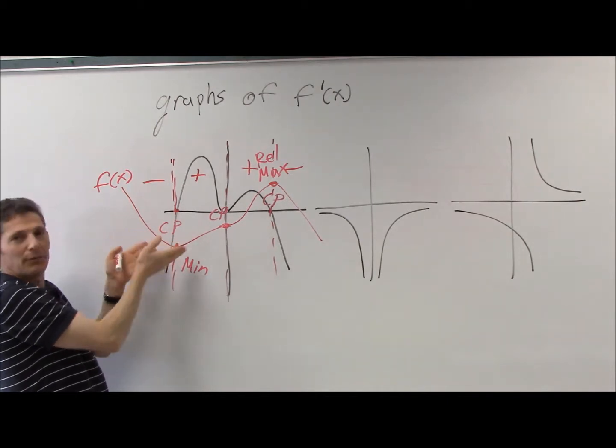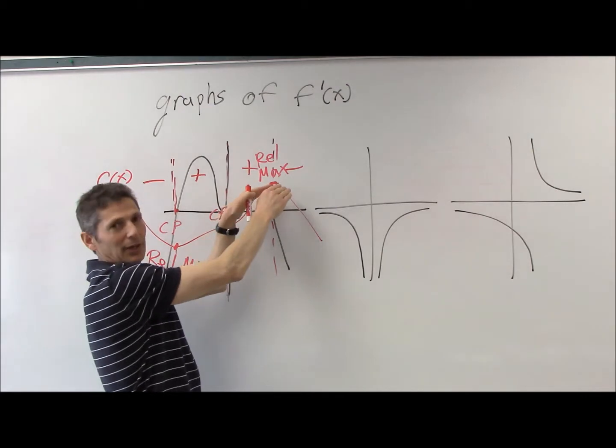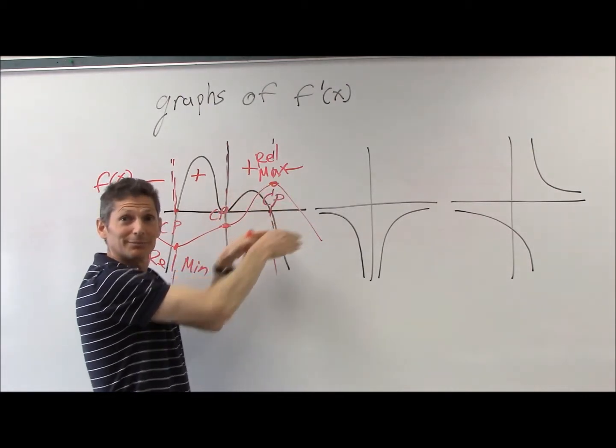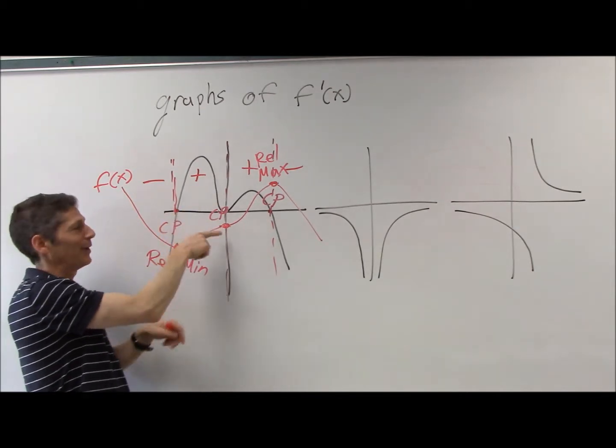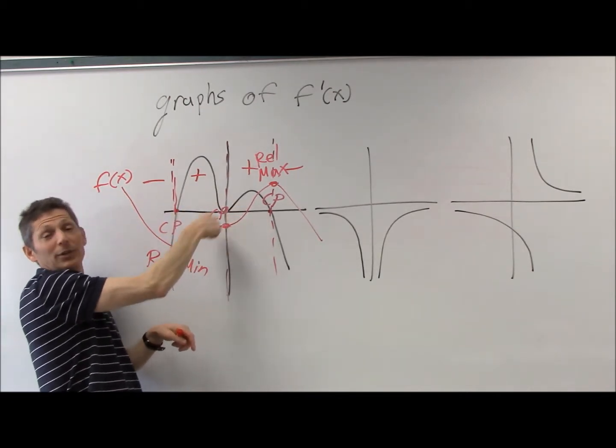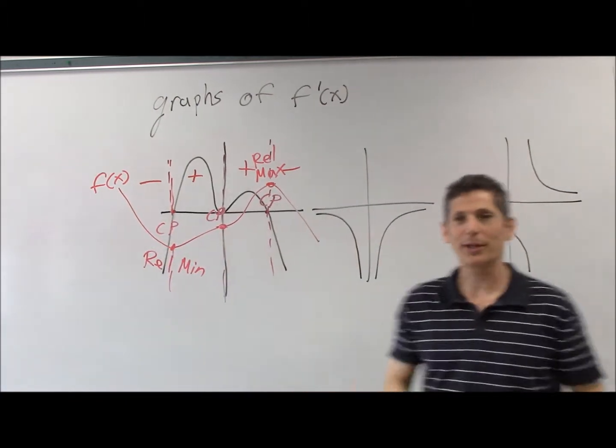Remember, relative minimum means I'm in a valley. If I take a step on either side, I go uphill. Maximum, if I take a step on either side, I go downhill. Here I make a step, I go uphill on one side, downhill on the other. That's neither maximum nor minimum. Let's do the next one.